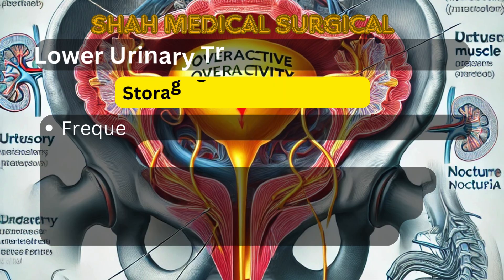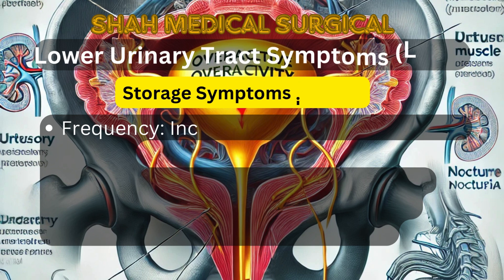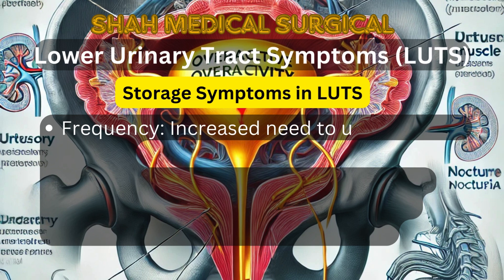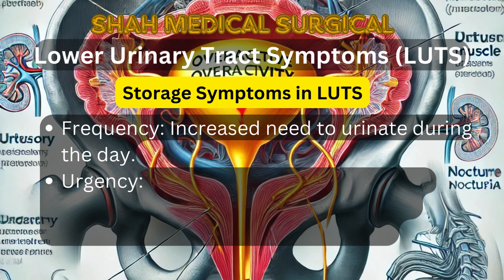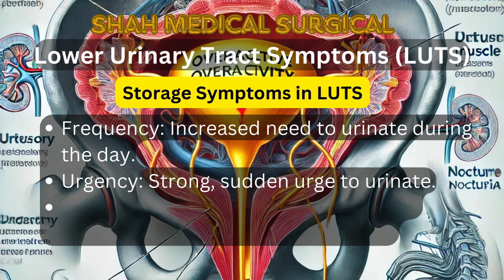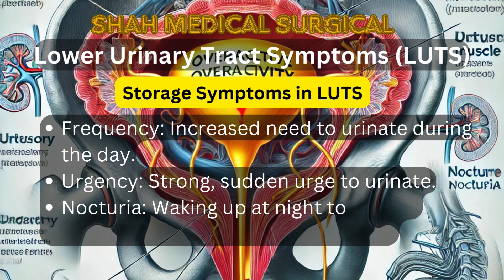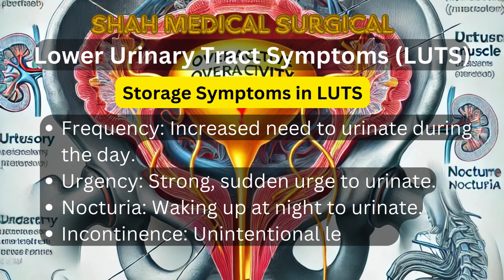Lower urinary tract symptoms are categorized into two types. Storage symptoms include: frequency — an increased need to urinate during the day; urgency — a strong, sudden urge to urinate that's difficult to delay; nocturia — waking up at night to urinate; and incontinence — unintentional leakage of urine.